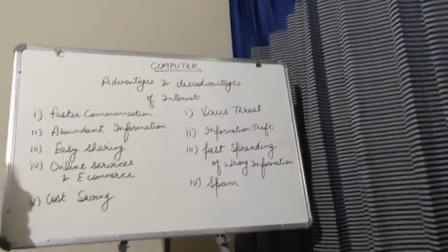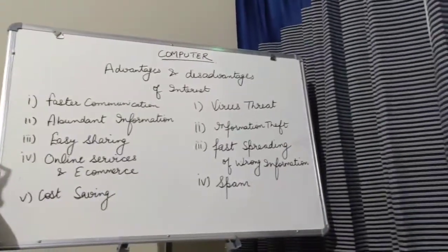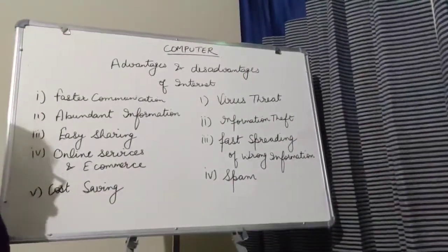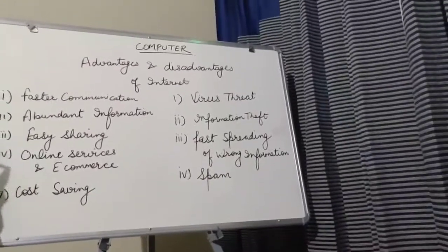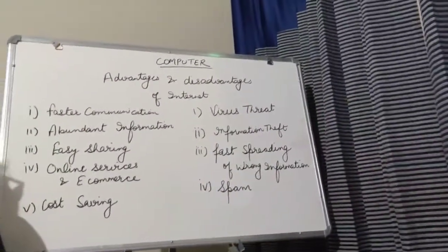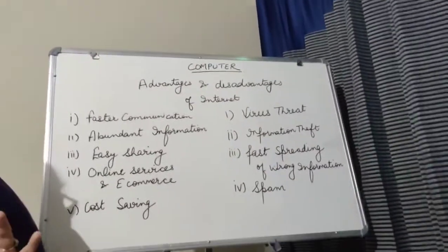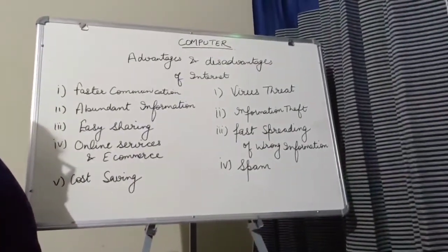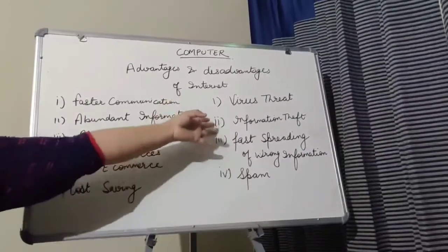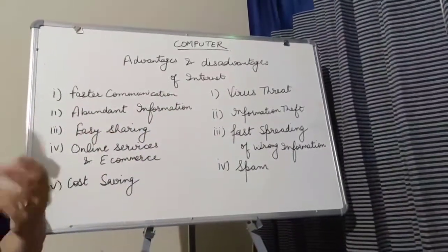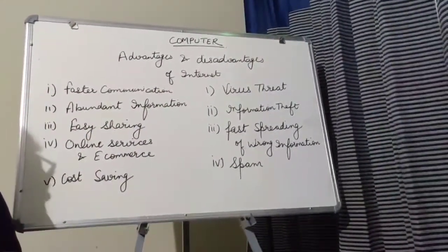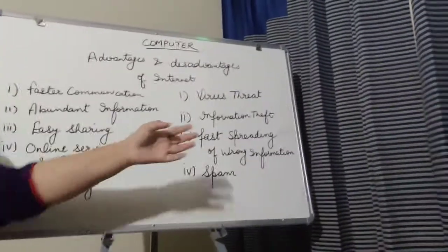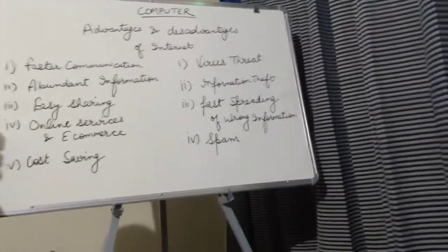Information theft. Internet ke through aapke information bhi theft ho sakti hai. Chori ho sakti hai aapke information ke bare mein. For example aapke id password ko hi chori kar sakta hai, e-mail, aapke bank account ki details koi chori kar sakta hai. So these all can easily be done through that is information theft.